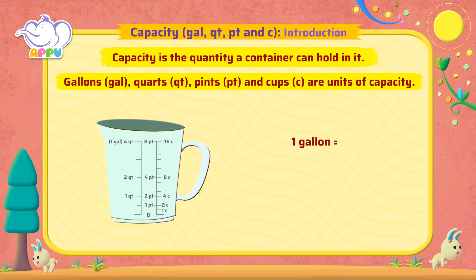One gallon is equal to four quarts. One quart is equal to two pints. One pint is equal to two cups. Amazing!